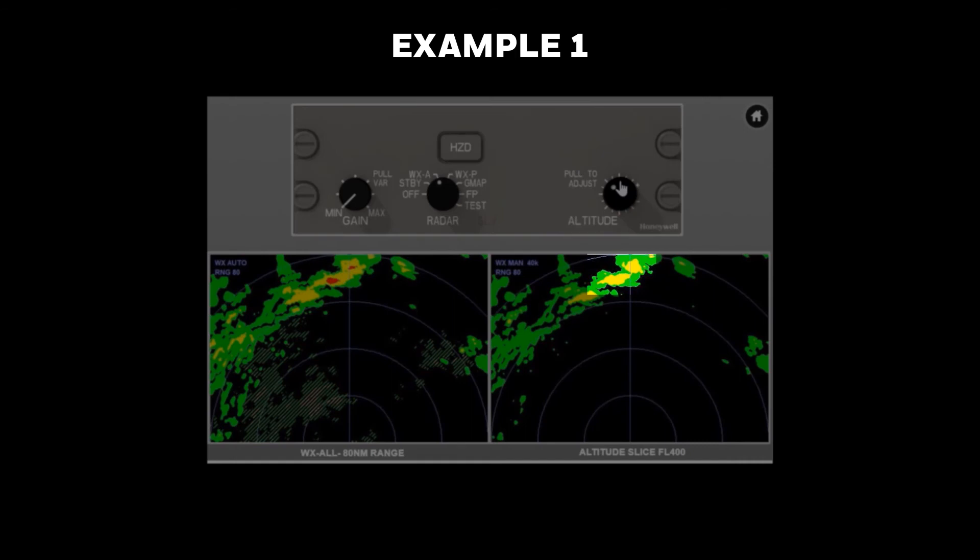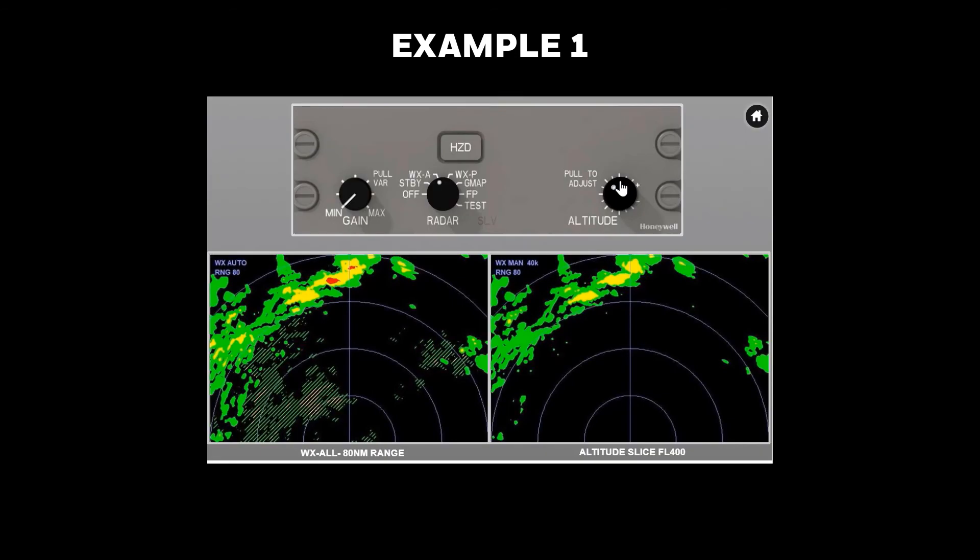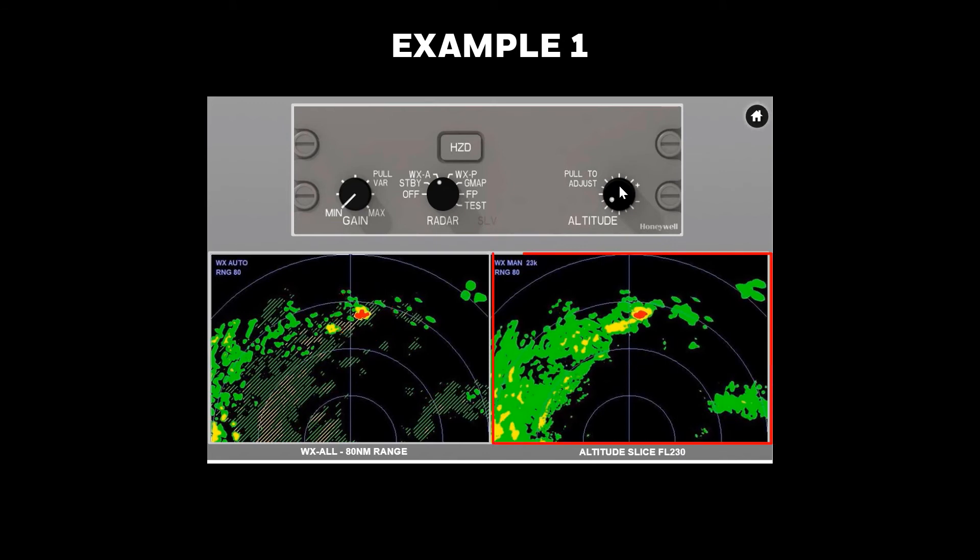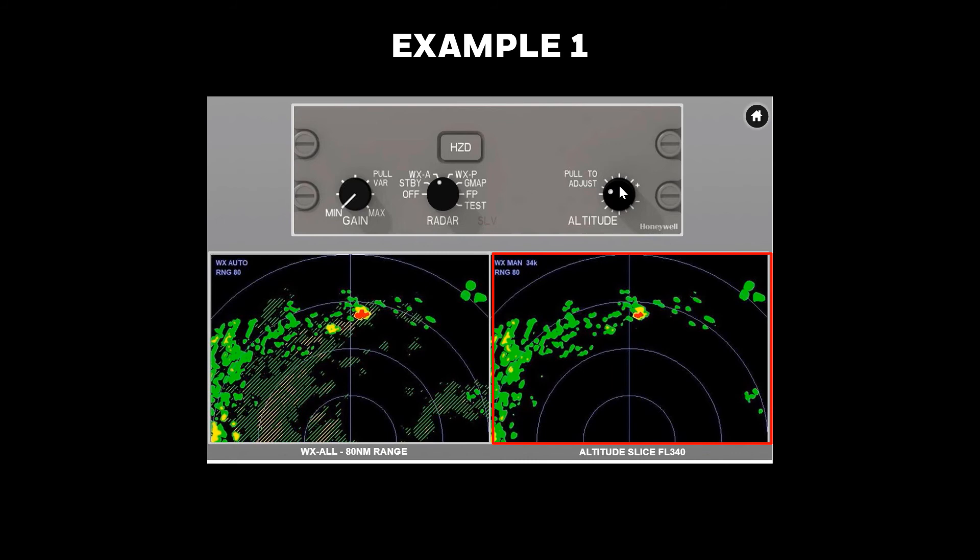An altitude slice at flight level 400 shows both cells to be carrying yellow reflectivity aloft. 20 miles closer, the cell on the right is showing much more reflectivity in auto mode. Using the altitude knob, a slice at flight level 400 shows it is the only cell that is a hazard at the aircraft's flight level. Also, the weather to the right of the two cells in the deviation path has developed into nothing of interest.